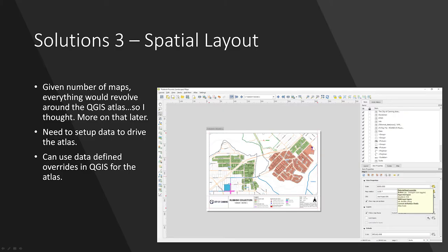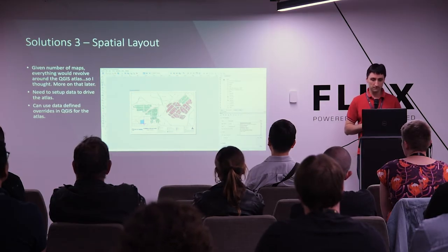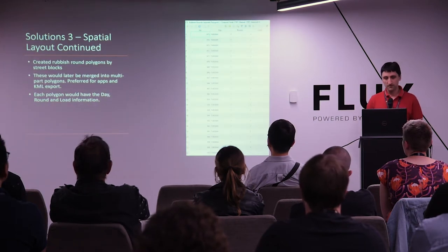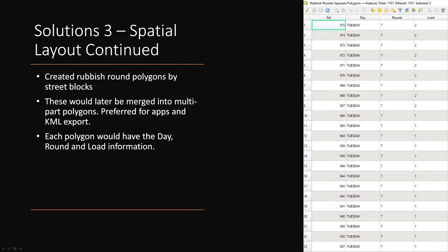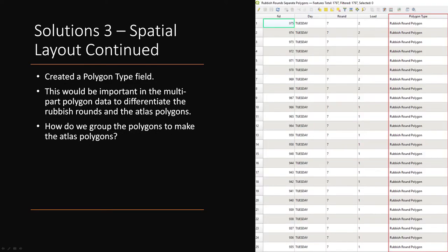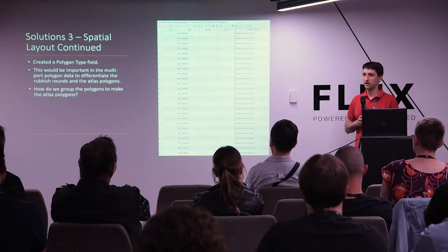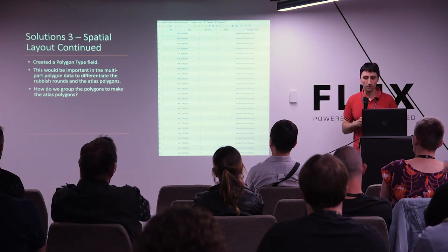The next issue was spatial layout. I was determined to use the QGIS Atlas for all these maps and set up the data to really drive it. I created the rubbish rounds polygons by street block with the day, round, and load information, later merged into a multi-part polygon. I also created a polygon type field because I quickly realised I'd need to generate Atlas polygons that don't necessarily match the rubbish rounds data — I'd have to break some things up to make multiple maps.